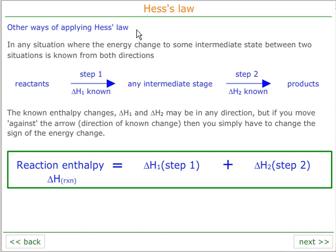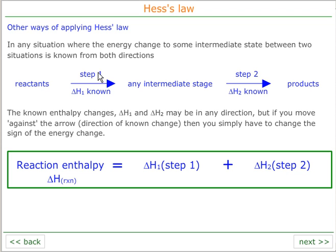We can also apply Hess's law if we can find any intermediate stage that we can pass through. Provided we know the first step and the second step — or the reverse of either the first step or the second step — we can apply Hess's law. We can say reactants go via an intermediate stage to products, so delta H1 plus delta H2 equals delta H reaction.